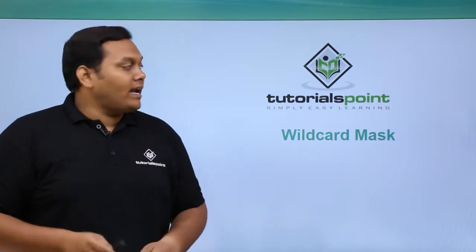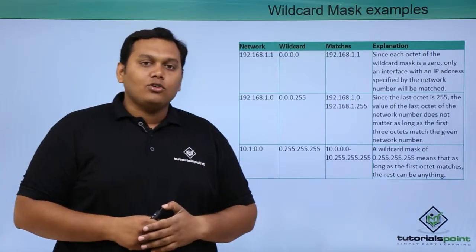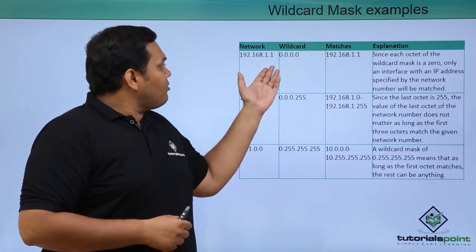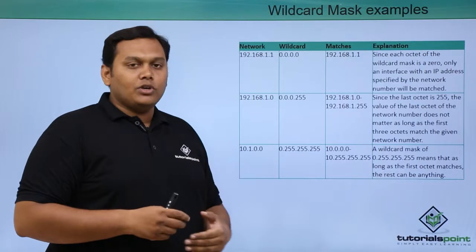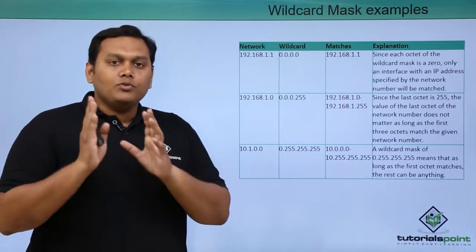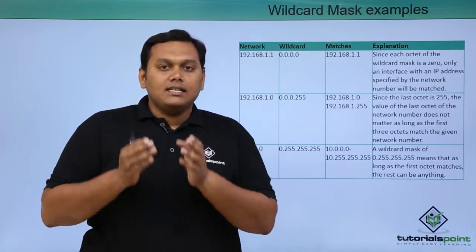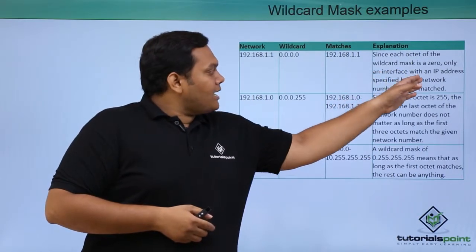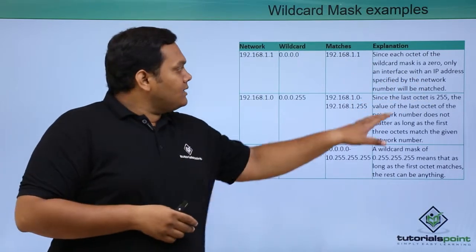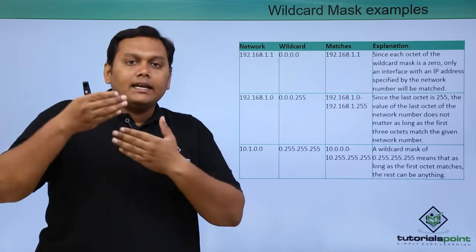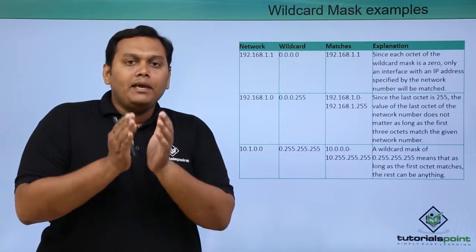Looking at some examples of the wildcard mask: for the network 192.168.1.0, the wildcard mask is 0.0.0.0, and it matches with 192.168.1.1. Since each octet of the wildcard mask is 0, only an interface with the IP address specified by the network number will be matched.